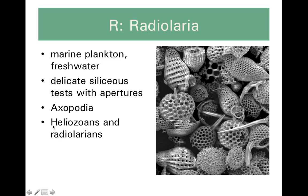Heliozoans is another name applied to these organisms — that means sun animals. Radiolarians, because of their radial symmetry, are kind of round in cross-section, but sometimes they have different types of spines and different appendages on them.